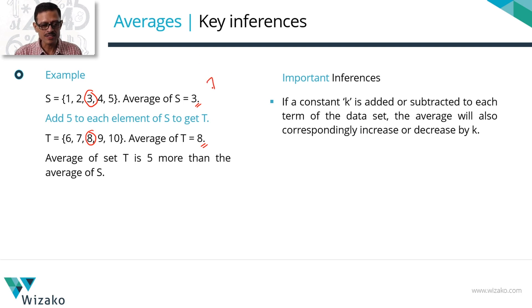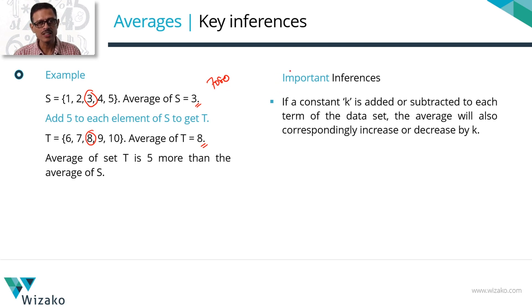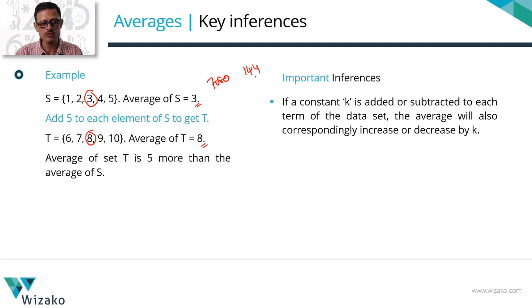Look at what we did in the problem: we subtracted 7080 from both averages — which is as good as subtracting 7080 from each individual salary. We then found an intermediate average that was 7080 less than it should be. Adding back the 7080 is the same as adding 7080 back to each salary, which means the average goes up by 7080. So we reduced it to find an intermediate average of 14.4 and then added 7080 back to get the final average of 7094.4.